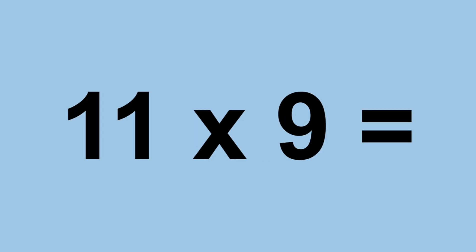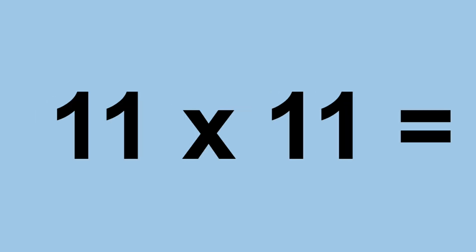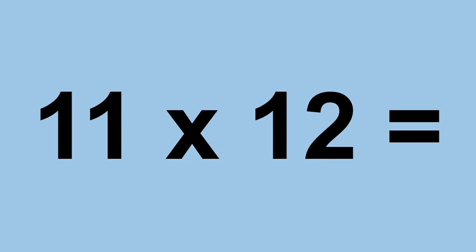Eleven times nine equals ninety-nine. Eleven times ten equals one hundred and ten. Eleven times eleven equals one hundred and twenty-one. Eleven times twelve equals one hundred and thirty-two.